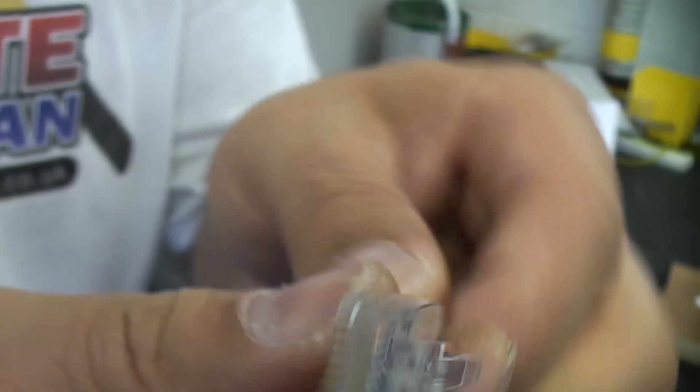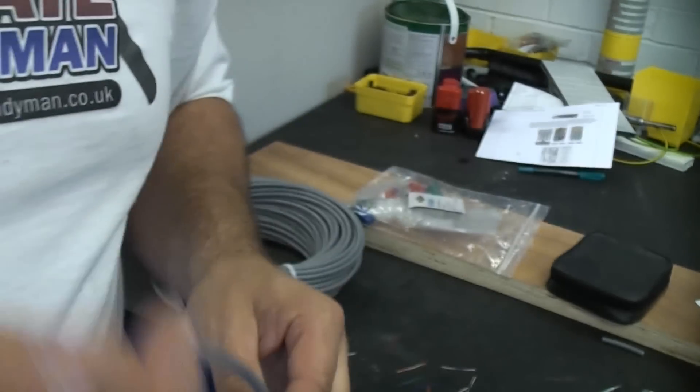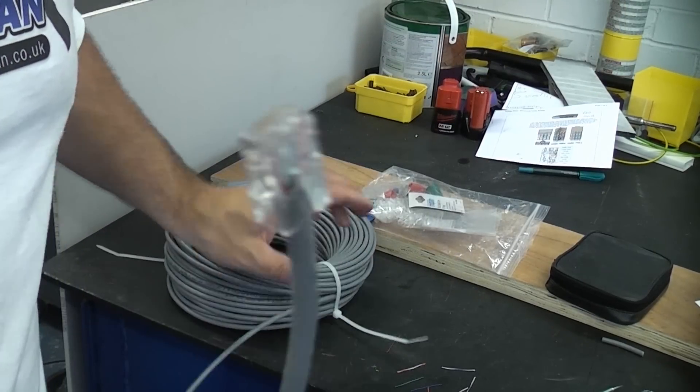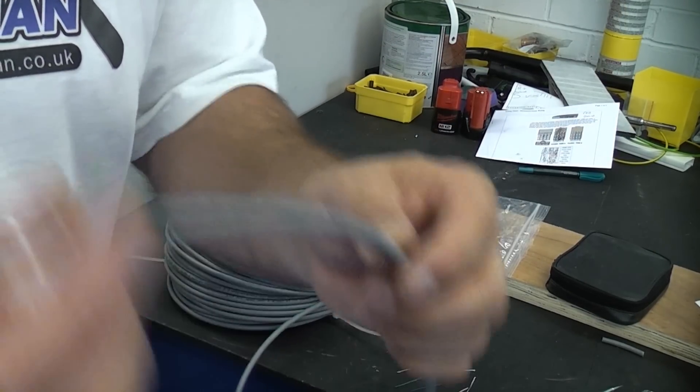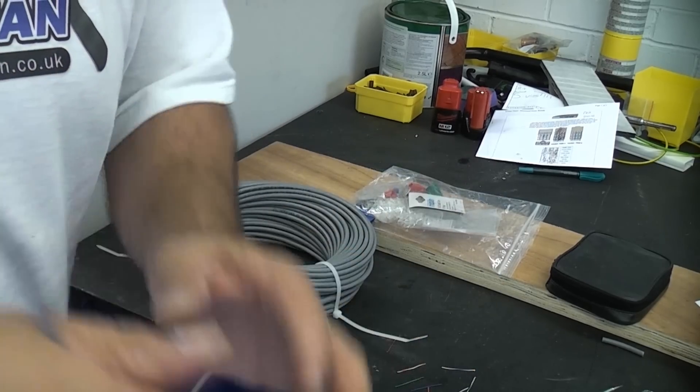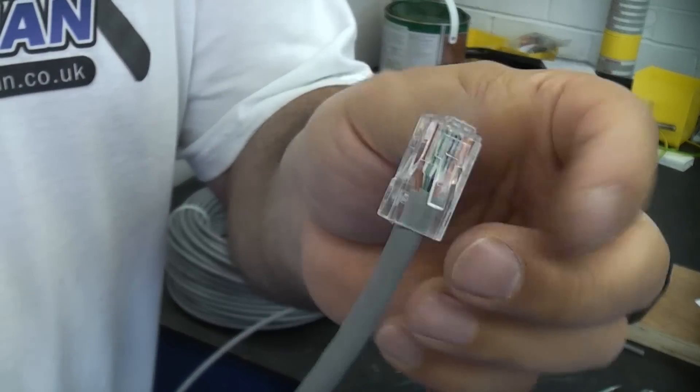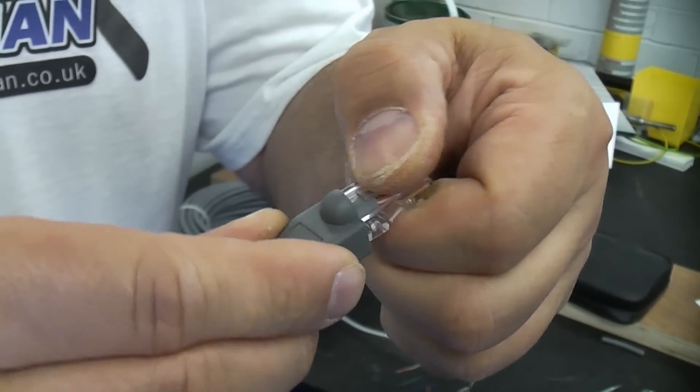You can then visually inspect it and check that it is okay. Once you've done that and you have terminated the other end either into an RJ45 connector or a socket, you need to test the actual cable using a cable tester.